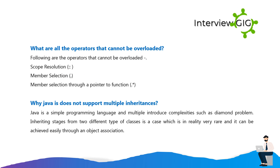What are all the operators that cannot be overloaded? Following are the operators that cannot be overloaded: scope resolution, member selection, and member selection through a pointer to function. Why does Java not support multiple inheritance? Java is a simple programming language and multiple inheritance introduces complexities such as the diamond problem. Inheriting states from two different types of classes is a case which is in reality very rare and it can be achieved easily through object association.